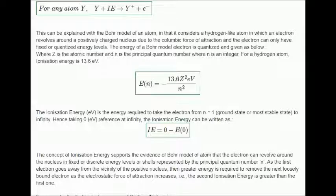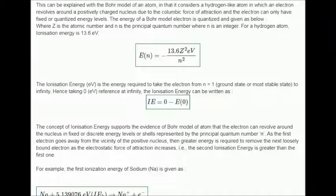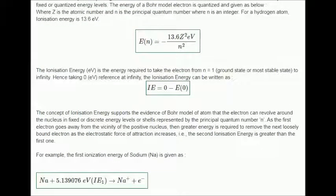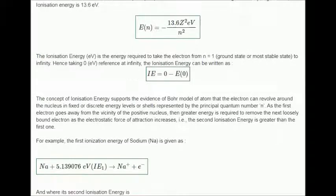The concept of ionization energy supports the evidence of Bohr model of atom that the electron can revolve around the nucleus in fixed or discrete energy levels or shells represented by the principal quantum number n. As the first electron goes away from the vicinity of the positive nucleus, then greater energy is required to remove the next loosely bound electron as the electrostatic force of attraction increases. In an example, the second ionization energy is greater than the first one.